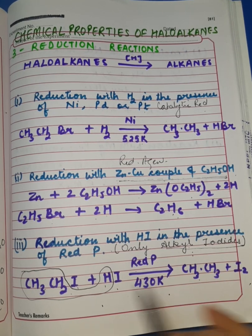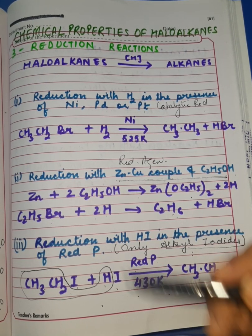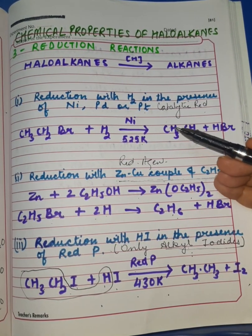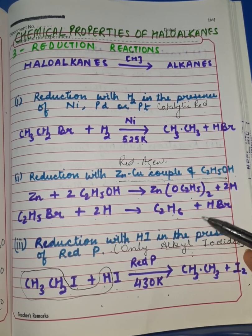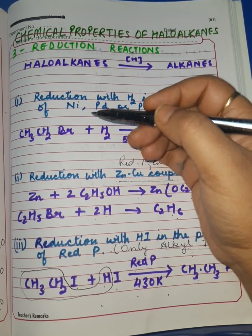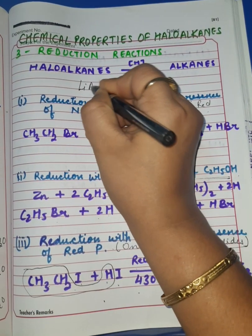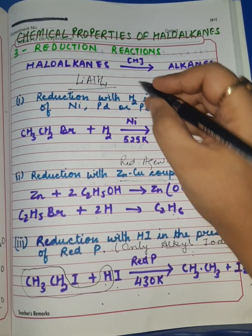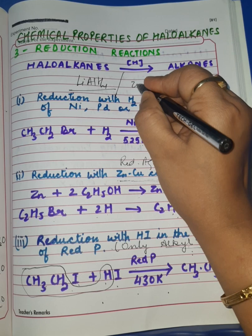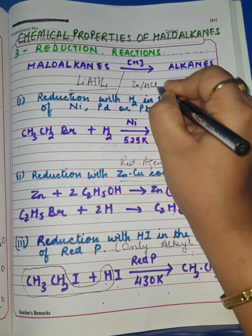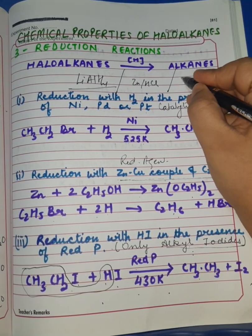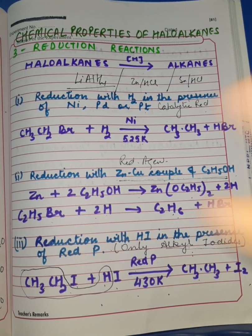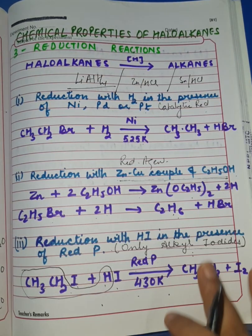Remember once again, only alkyl iodides can be reduced by this reaction. Dear students, this reduction can be brought about in many ways. Only a few ways I have listed out. You can even make use of some other reducing agents like LiAlH₄ for the reduction of haloalkanes, or you can make use of zinc-HCl or tin-HCl. These are the basic reducing agents used for the reduction of organic compounds. I hope this reduction reaction is clear to all of you.